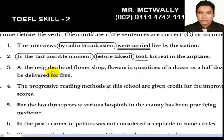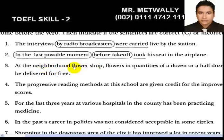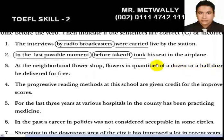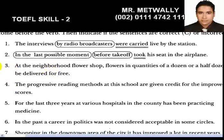Number 3: 'In the neighborhood flower shop' — 'in' is a preposition, so this is a prepositional phrase. 'Great flowers in quantities of dozens or half dozens can be delivered for free.' 'Flowers' is the subject, 'in quantities of dozens' and 'of half dozens' are prepositional phrases, and 'can be delivered' is the verb. 'For free' is another prepositional phrase. This sentence is correct.